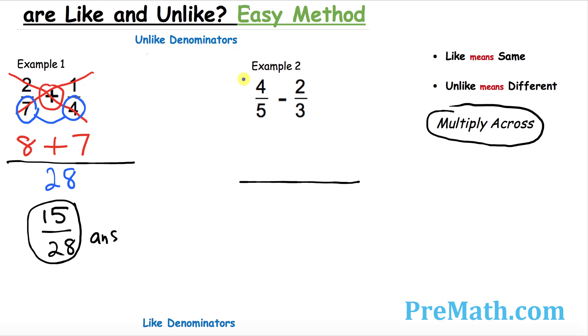And then I want you to do exactly the same way we did before in the previous example. Go ahead and cross multiply, multiply them across: 4 times 3 is 12. And then there's a minus sign in between, just write down minus sign, and then let's go the other way around and multiply them across as well, which is 2 times 5 is 10.